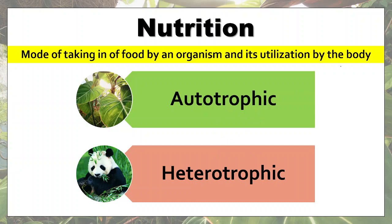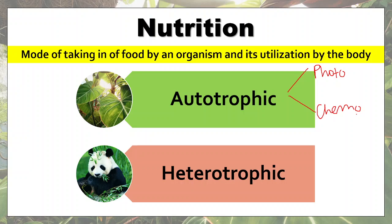This source of energy can be of two types. One source is light energy, and those organisms which use light energy to synthesize their own food are known as photo-autotrophic organisms. There is also another source — chemical substances — where the energy in the bonds of chemical molecules is released when those bonds are broken down, and that energy is used to synthesize food. Such organisms are known as chemo-autotrophic organisms. So autotrophic nutrition can be photo-autotrophic or chemo-autotrophic depending on the source of energy used.